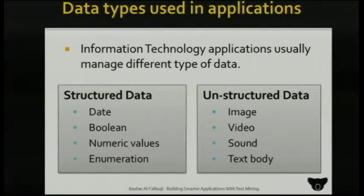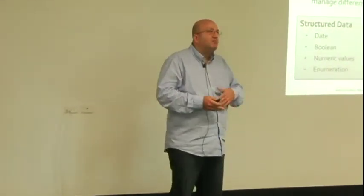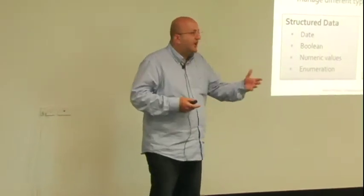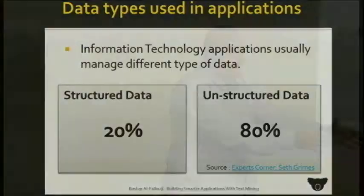Usually when you have an application, you have two types of data: structured data and unstructured data. Structured data is things like dates, numbers, booleans, enumerations — things you feel comfortable dealing with. It's easy. Then you have unstructured data: images, videos, sounds, bodies of text. You know the nature of its content, but you don't really know what is behind it. There's a study that says about 80% of data in applications is actually unstructured, and only 20% is structured.